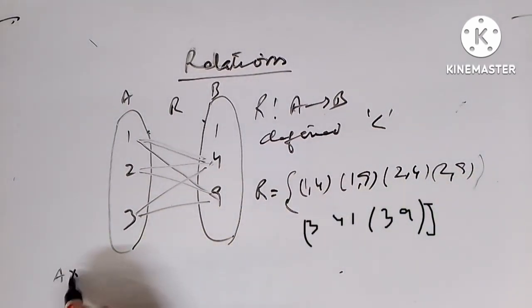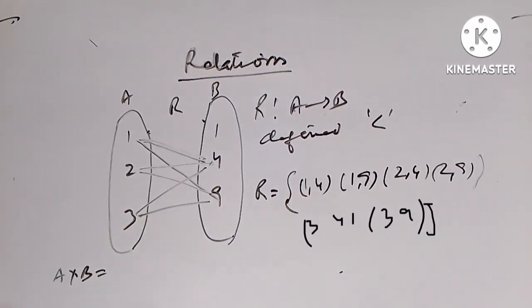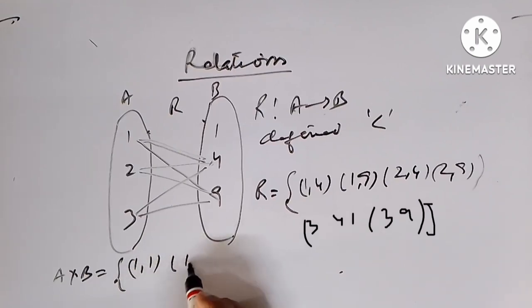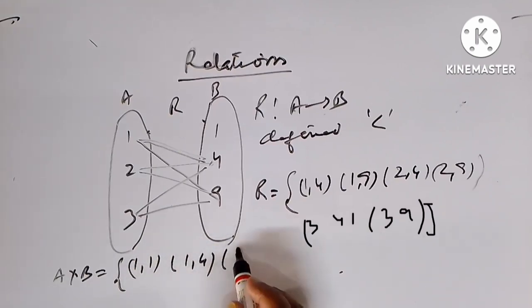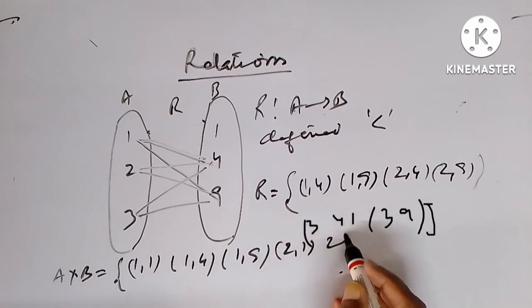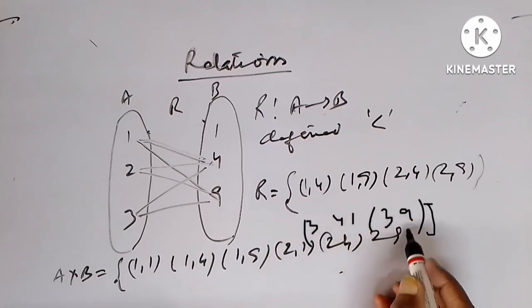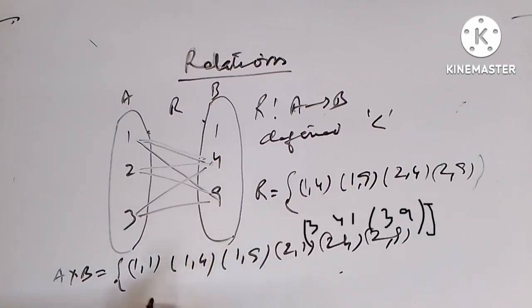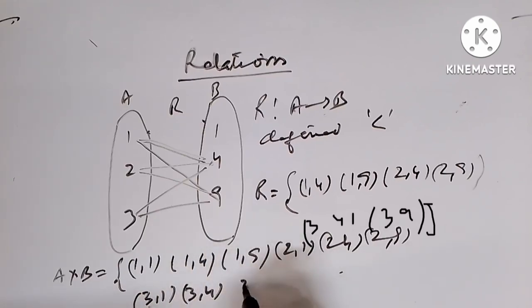Now at the same time we try to find A cross B, the Cartesian product. This is equal to {(1,1), (1,4), (1,9), (2,1), (2,4), (2,9), (3,1), (3,4), (3,9)}.